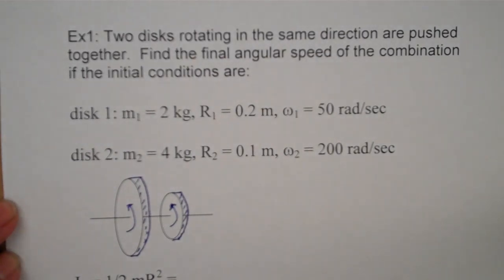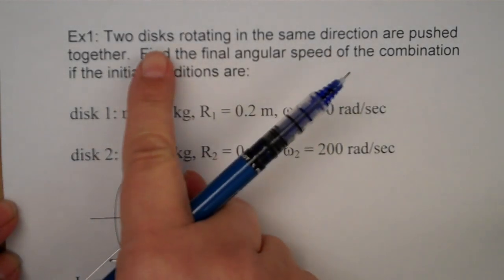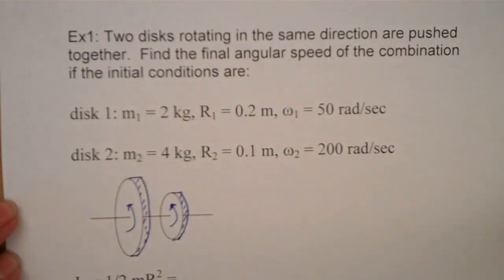Our first example for angular momentum is as follows. We have two disks rotating in the same direction. We're going to make them rotate counterclockwise looking at them, are pushed together so we have a collision. We're asked to find the final angular speed of the combination when they're stuck together.